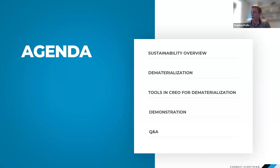Thank you Sophie. For our agenda today, we'll start out with an overview of sustainability — what sustainability means, some of the problems with manufacturing today, and some of the solutions and benefits of focusing on sustainability. We're going to be focusing mainly on dematerialization, which is the first part of our three-part webinar series. We'll be talking about some tools in Creo for dematerialization and then end with a short demo.